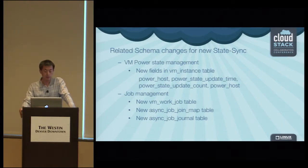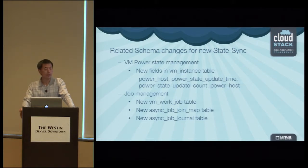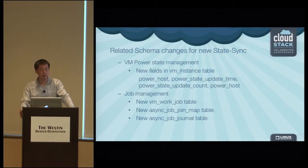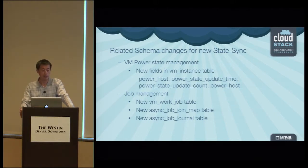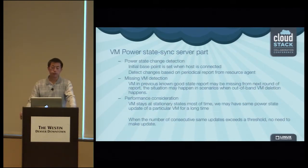The following slides show the details of the schema-level changes. Because we now manage power state independently from the regular CloudStack VM state, we have new fields in the VM instance table. To utilize the job facility and accommodate this sync framework, we made a lot of improvements to job management — adding a new VM work job table, a new sync job join map table, and a new sync job general table.